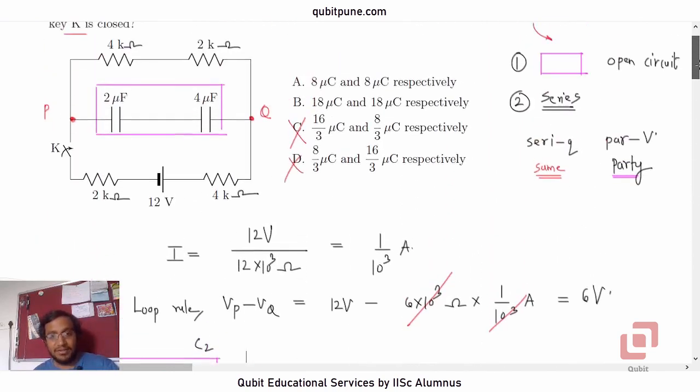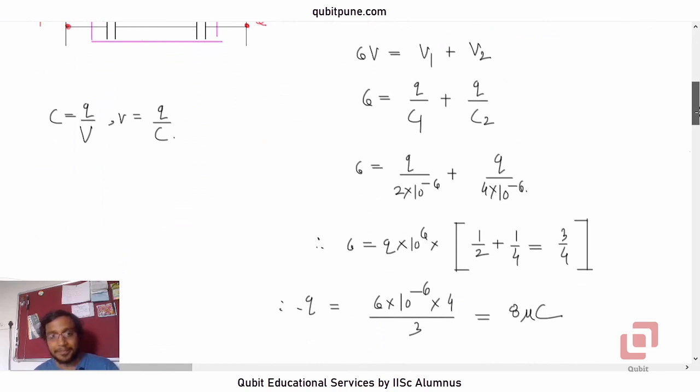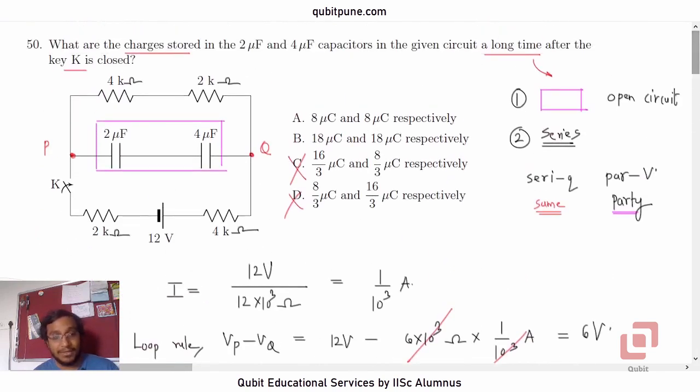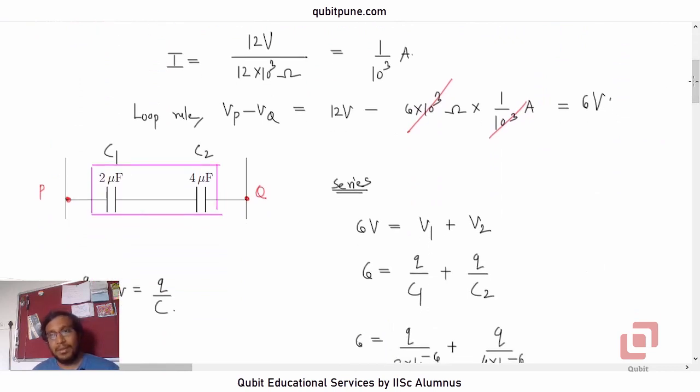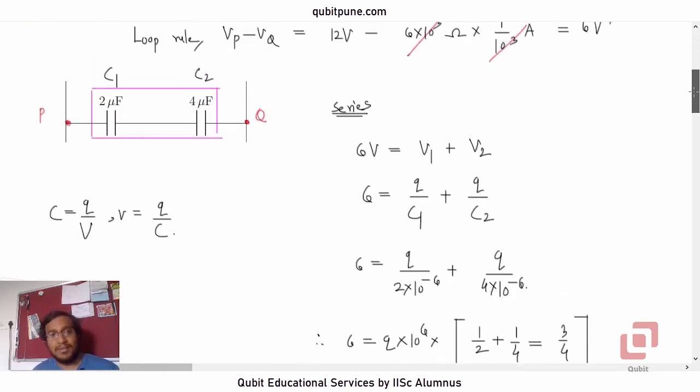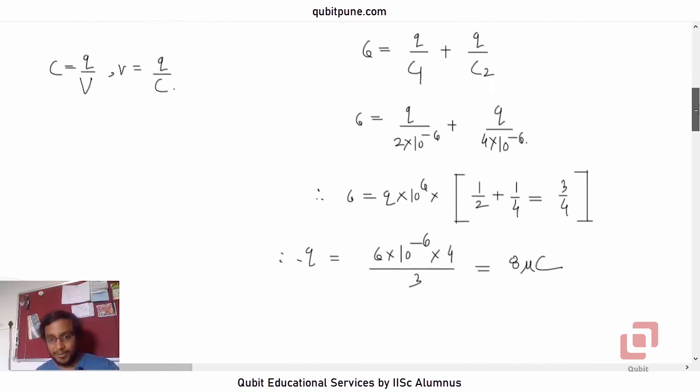Charge stored in that capacitor is 8 microcoulomb. So that is option A. I thought it was a lengthy problem because we had to find the current first, we had to apply the loop rule, and then finally we had to bring in the series combination formula. But otherwise, it was a straightforward problem, I would say.